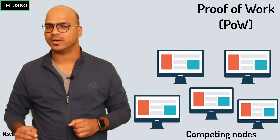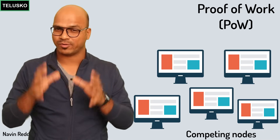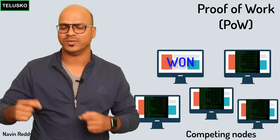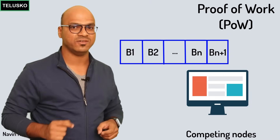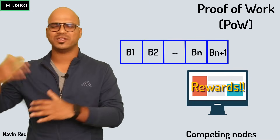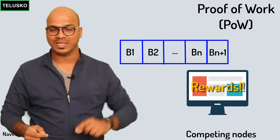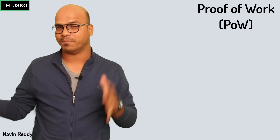Every node competing to add that block in the blockchain has to do some computing work. They are given a mathematical calculation, and whoever solves that calculation will win. When they win, they can add the block to the blockchain and receive some coins or rewards. In the Bitcoin network they receive bitcoins; other networks have their own rules.